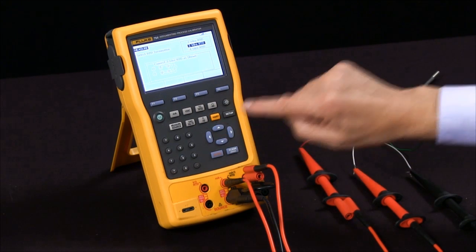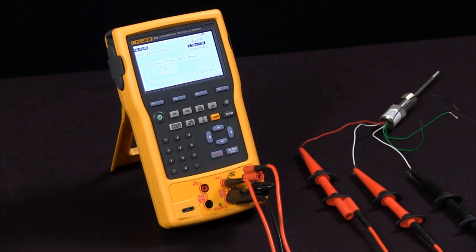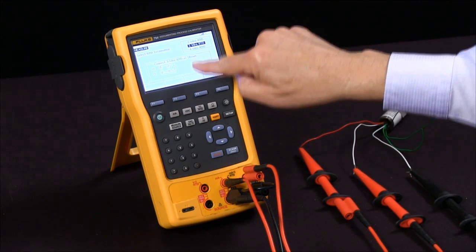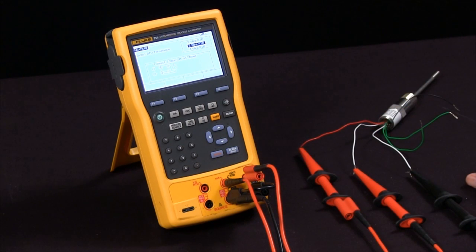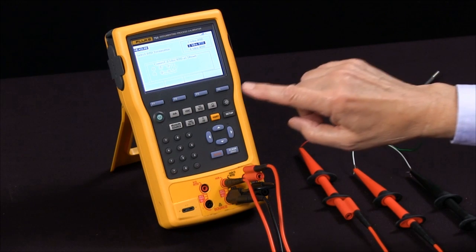This particular one we're going to use today is a 3 wire RTD. There's the connection diagram, and we've connected it up here and connected to the leads. So we're ready to actually measure this RTD.